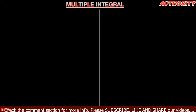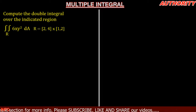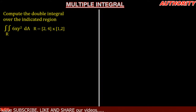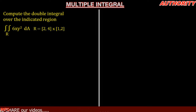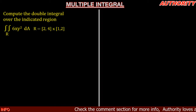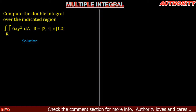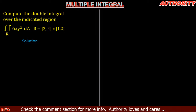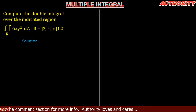Let's take a look at this question. Compute the double integral over the indicated region: the double integral over region R of 6xy² dA, where R is [2, 4] and [1, 2]. So we have to compute the double integral over the indicated region with region [2, 4] and [1, 2].